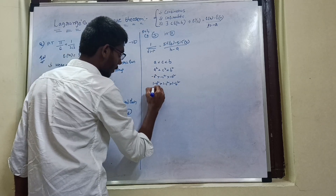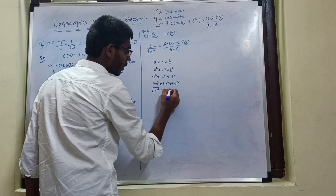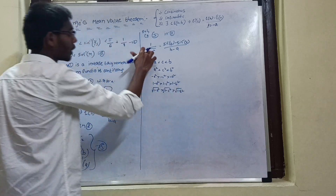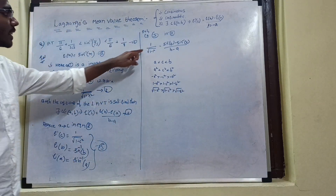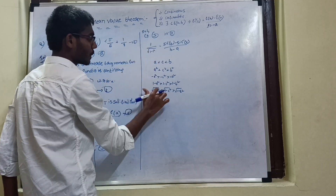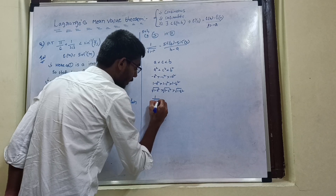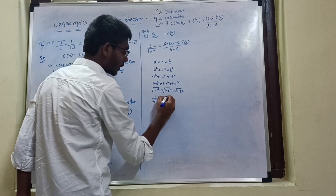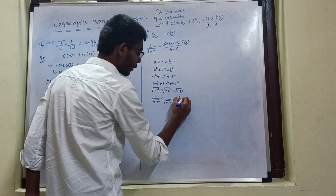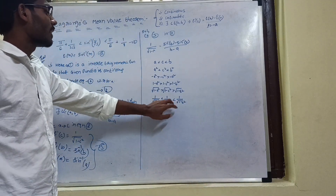Apply square root: √(1 − a²) > √(1 − c²) > √(1 − b²). Note that inequality direction changes with square root. Then apply reciprocal — reciprocal also changes the inequality. So: 1/√(1 − a²) < 1/√(1 − c²) < 1/√(1 − b²).